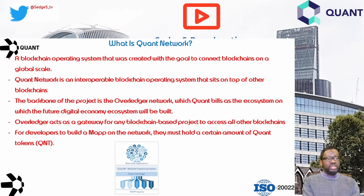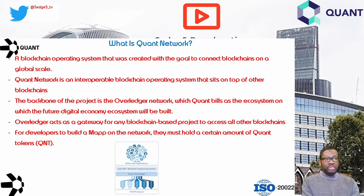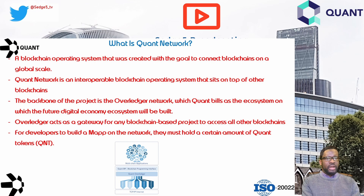The backbone of the project is the Overledger network, which Quant builds as the ecosystem on which future digital economy ecosystems will be built. Overledger acts as a gateway for any blockchain-based project to access all other blockchains. Overledger allows developers to build multi-chain applications, also known as MAPPs — M-A-P-P-S — as in decentralized apps or dApps. These are known as MAPPs, multi-chain applications, for their customers.